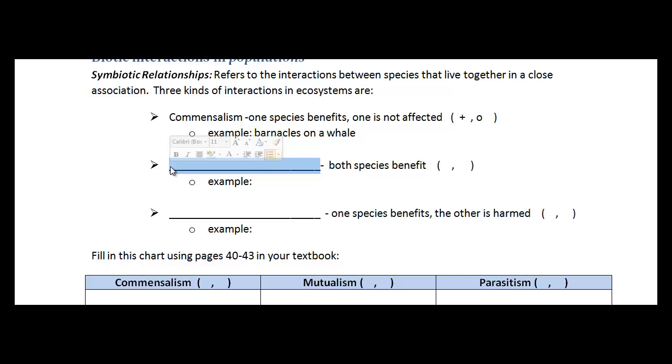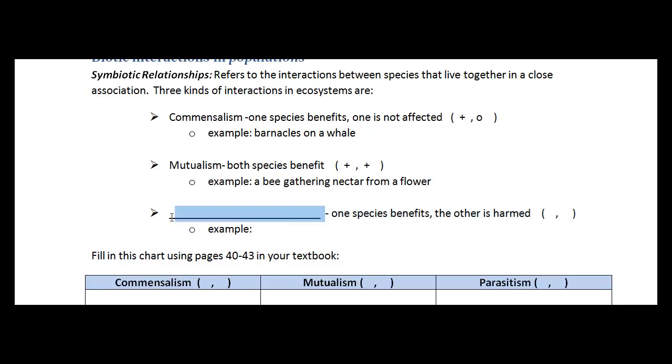The next one is when both species benefit from their interaction, which is called mutualism. And so both species have this positive interaction from this relationship. And an example of this would be a bee gathering nectar from a flower. And the third one is parasitism, where one species benefits and the other one is harmed. And an example of this would be hookworm in a dog.